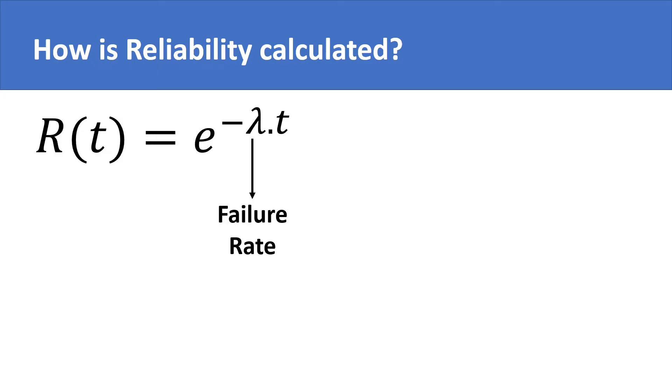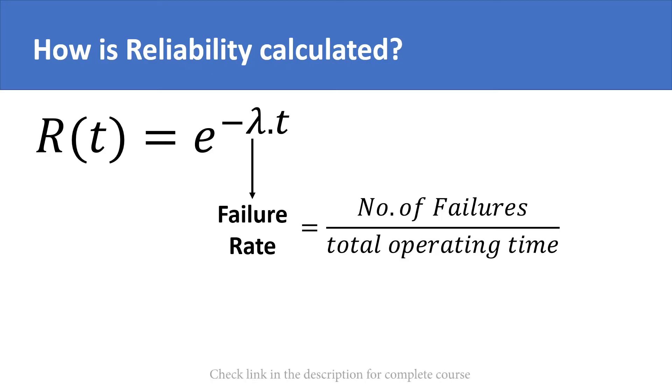Failure rate, as evident from the word, is simply the rate at which a machine fails. That is, failures per hour, or failures per month, or failures per whatever unit of time you want to make a calculation in.